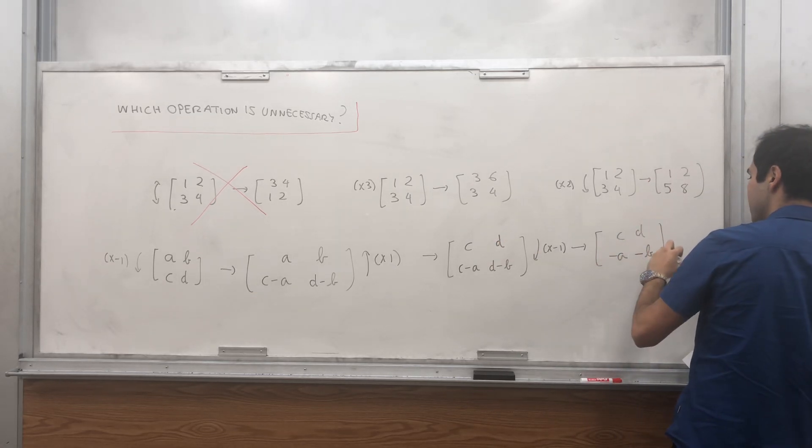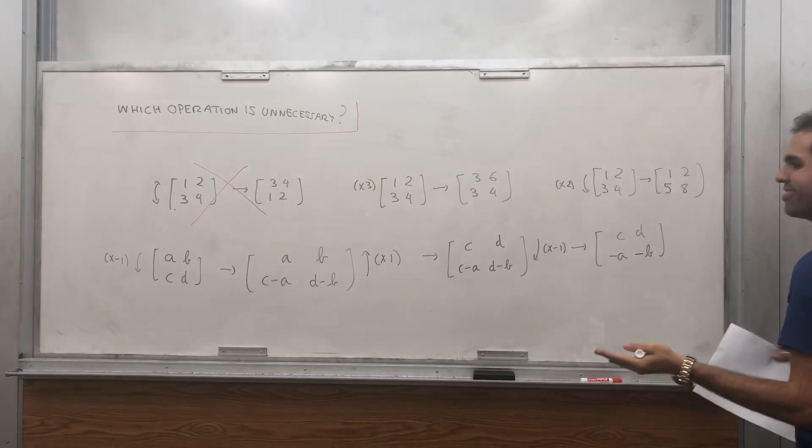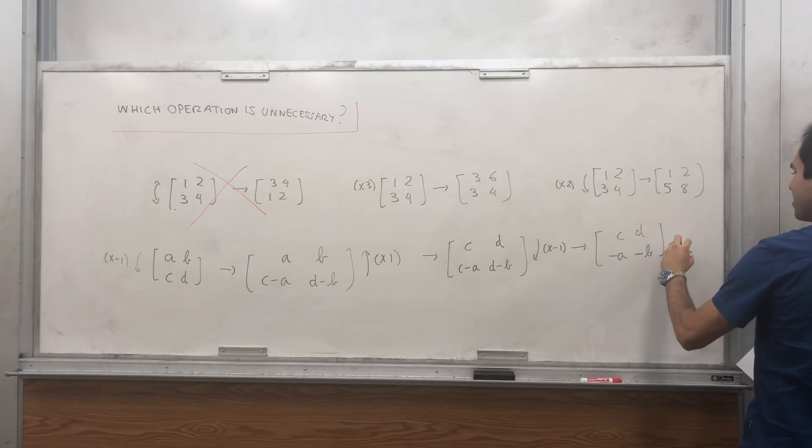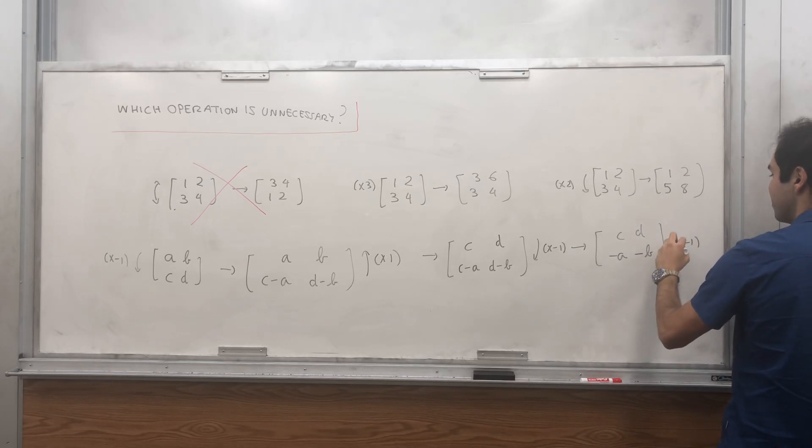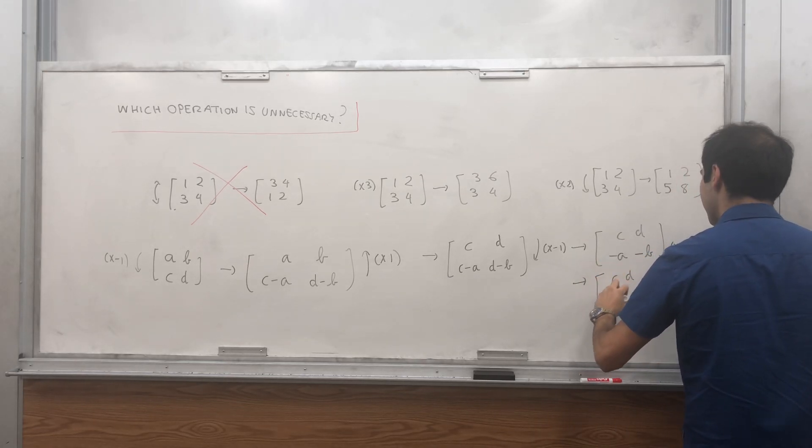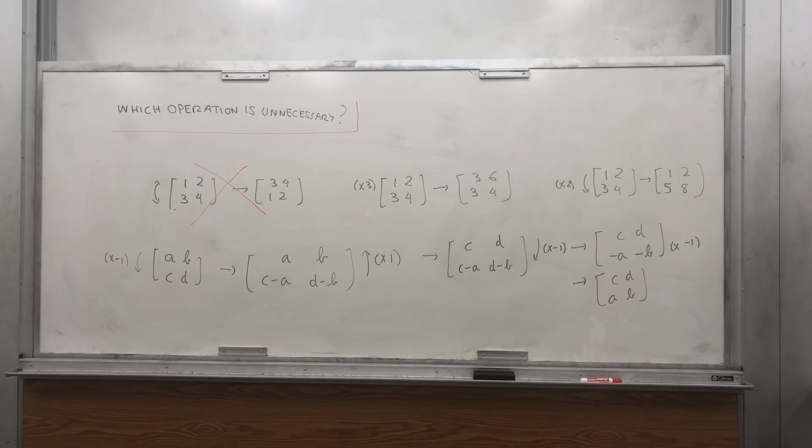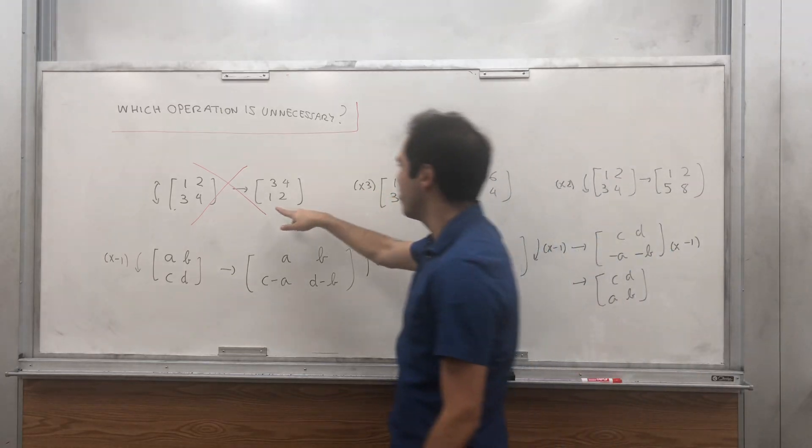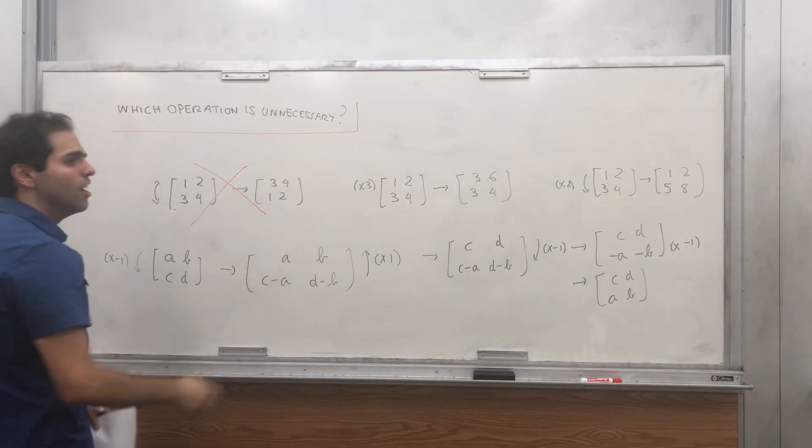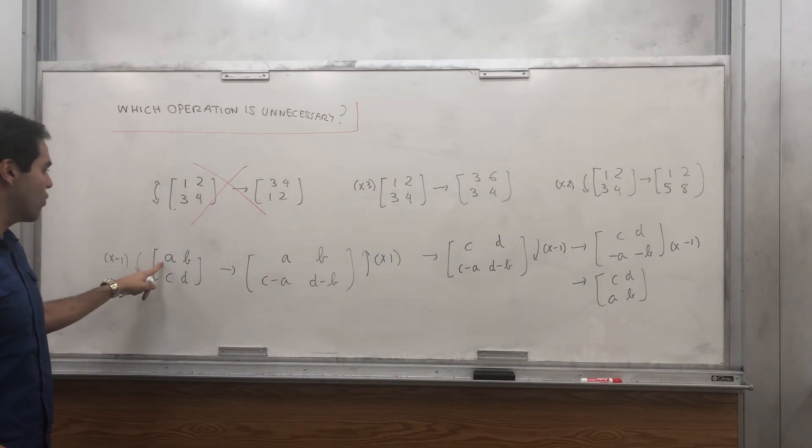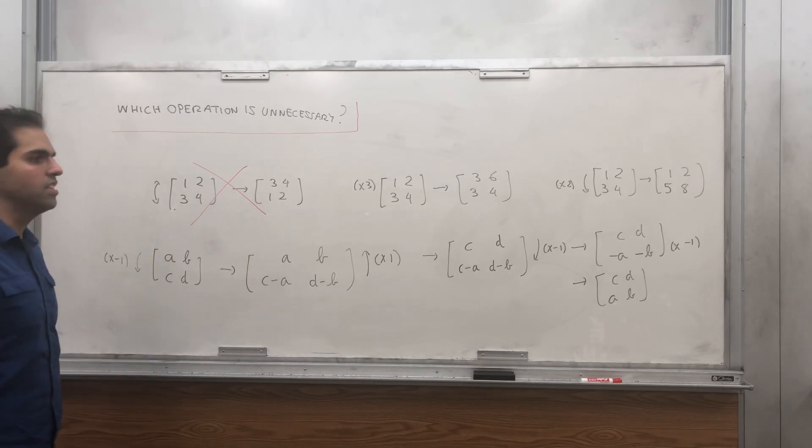And then lastly, it almost looks like CD, A, B, but just divide by minus one, or if you want, multiply by minus one, and we get CD, A, B. So you see, without even using this first kind of row operation, you were able to transform ABCD into CD, A, B.